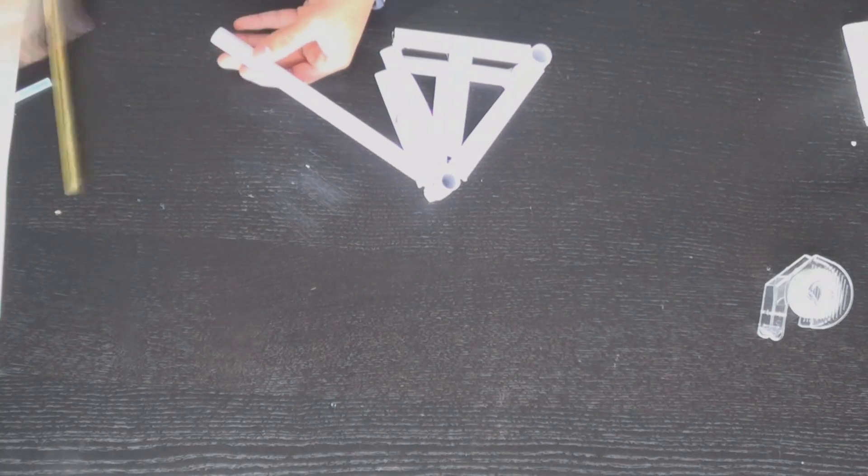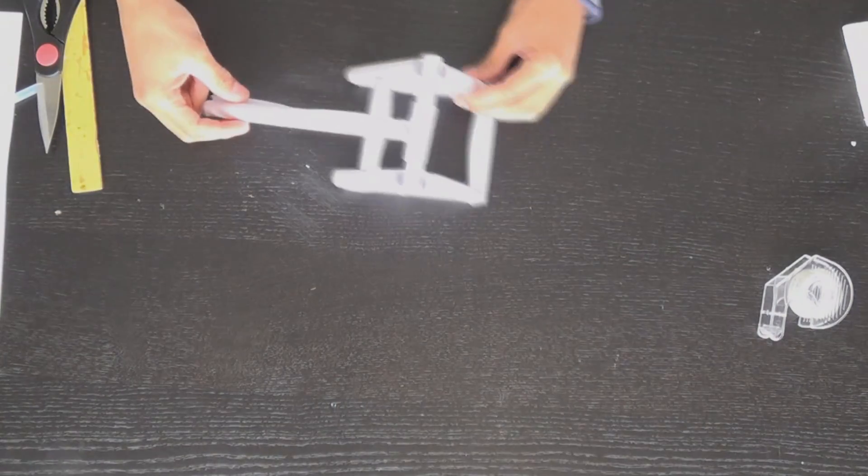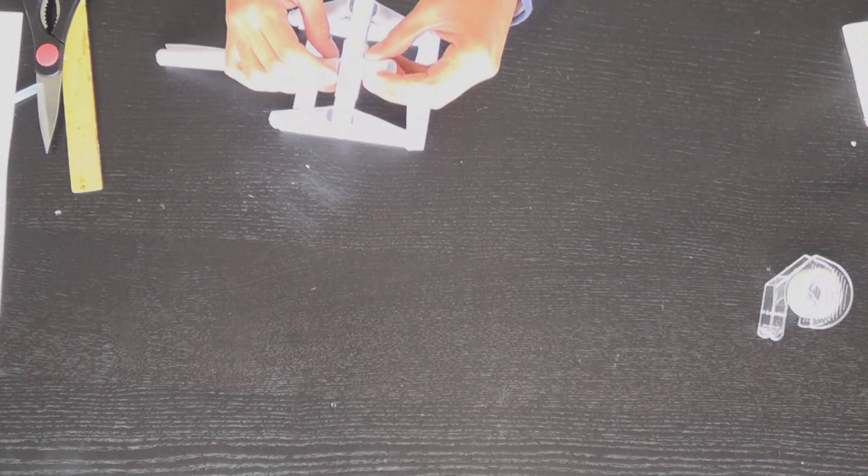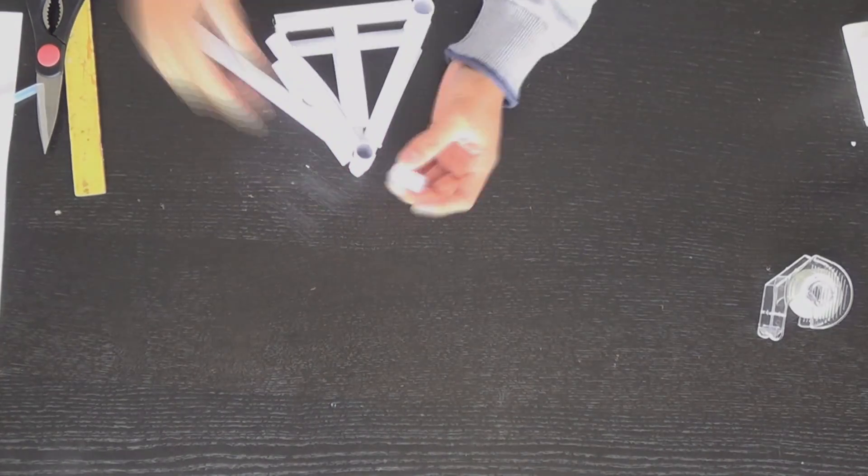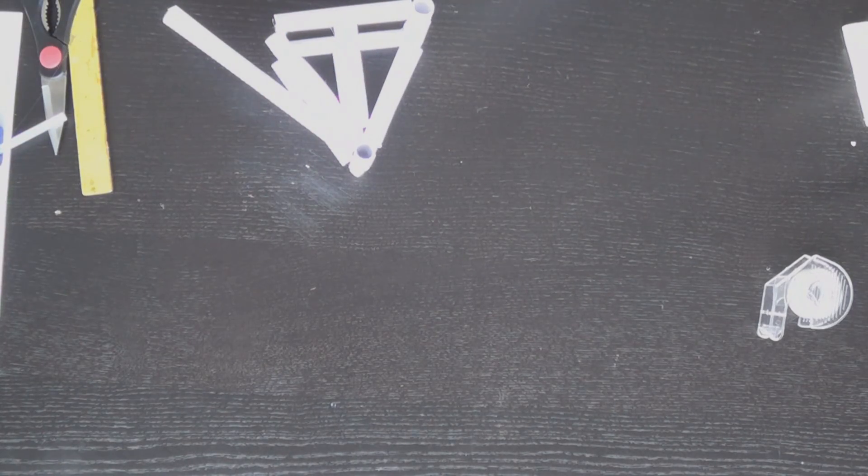Now we're going to take a small chunk off the end, and we're going to glue that onto the other side of the arm. This is where our counterweight is going to be mounted onto.